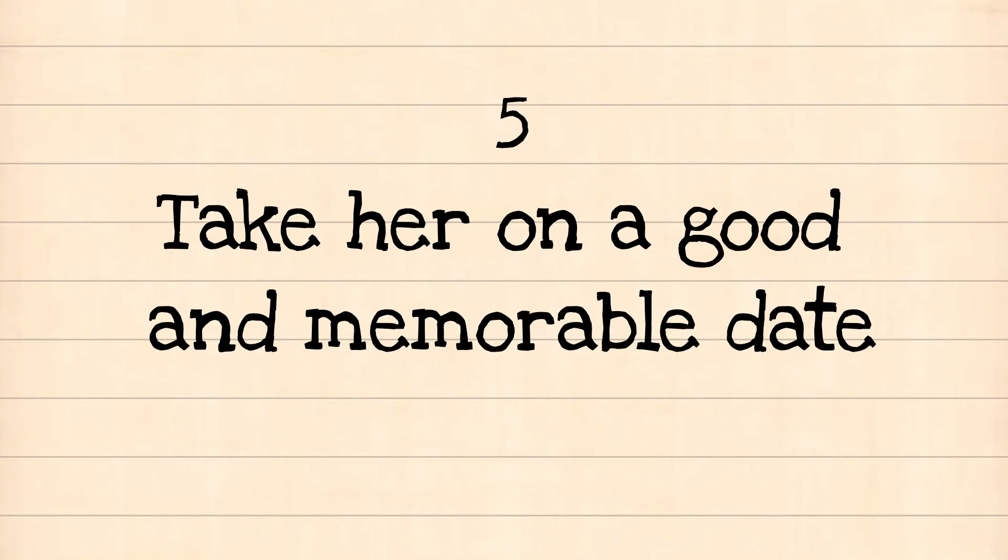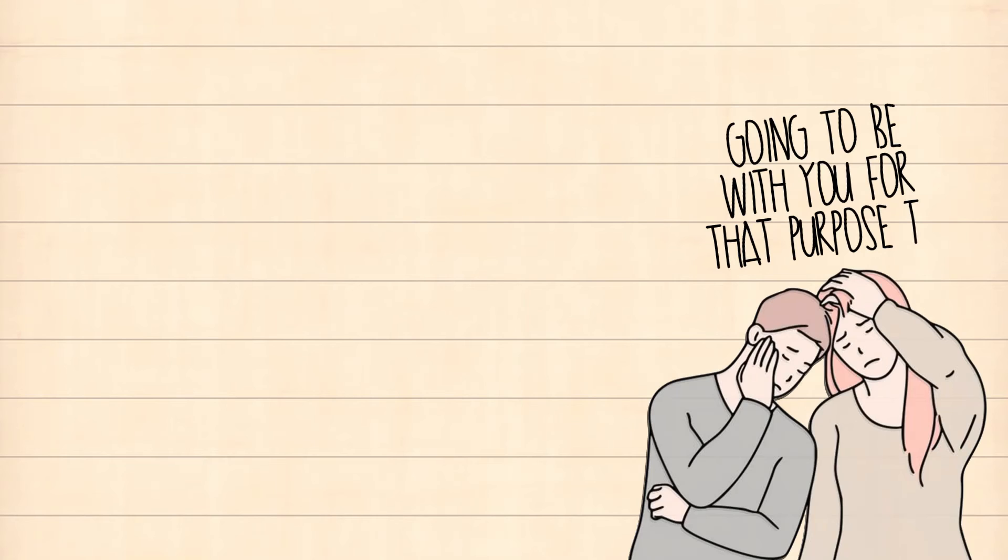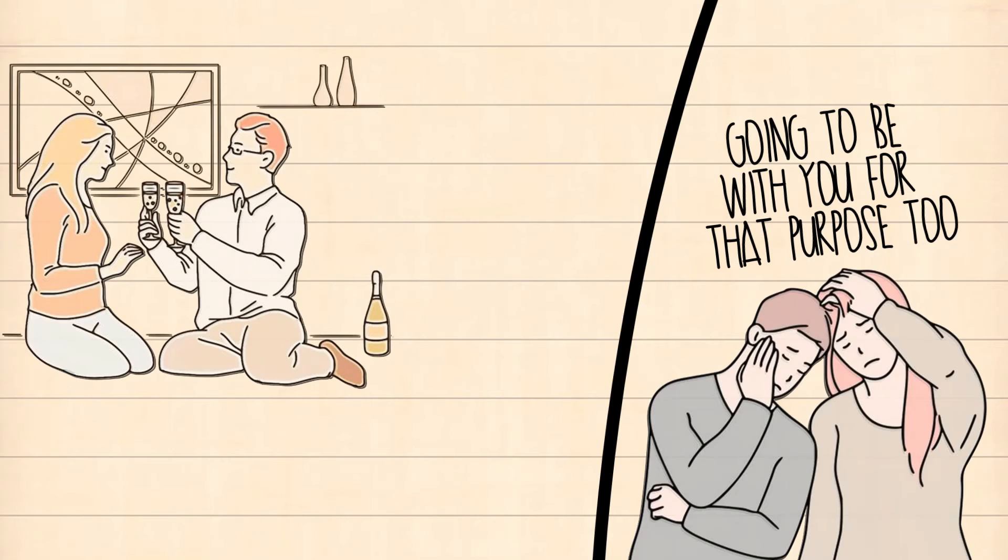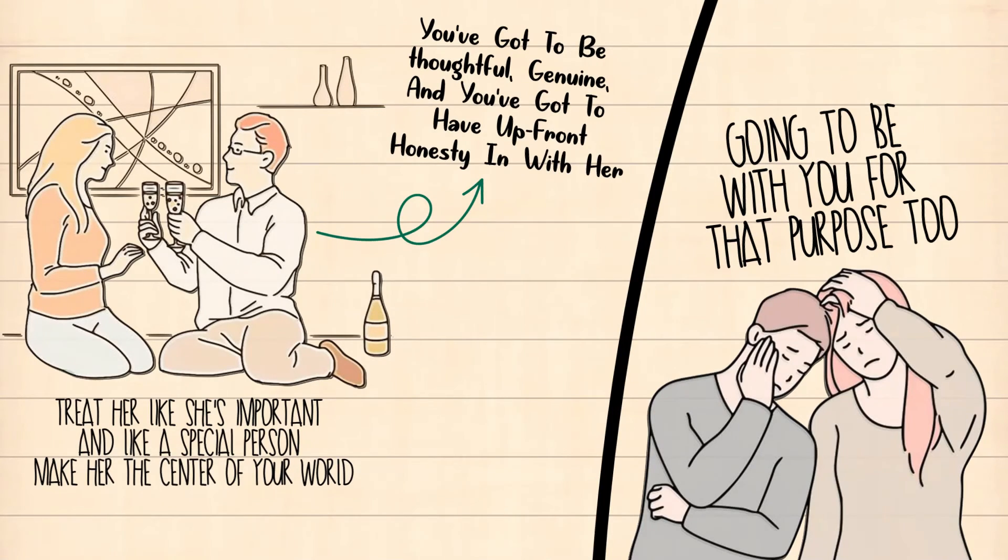Five: Take her on a good and memorable date. What's the point of having a partner if not for one main reason: to be with someone for life, and the other person is going to be with you for that purpose too. You're going to take her out on a date and make her stand in front of you. Treat her with respect. Treat her like she's important and like a special person. Make her the center of your world. That doesn't mean that you have to spend a lot of money on her. It means that you've got to be thoughtful, genuine, and you've got to have upfront honesty with her.